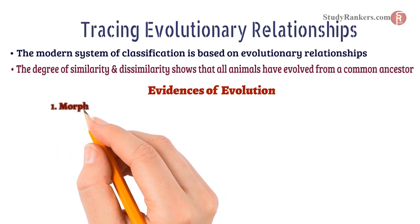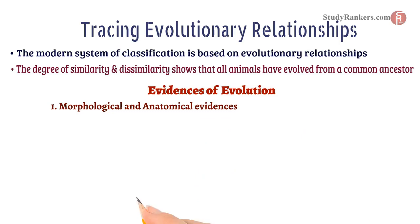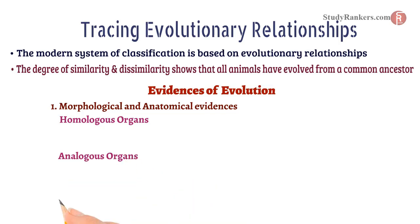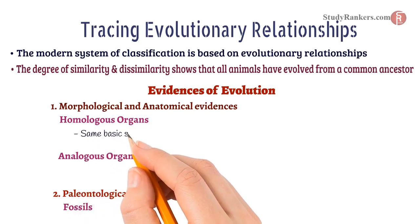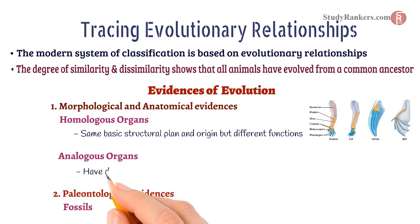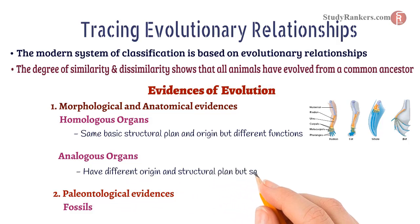The first evidence is morphological and anatomical evidences, which include homologous organs and analogous organs. Homologous organs have the same basic structural plan and origin but different functions. They suggest the presence of a common ancestor. For example, the four limbs of a frog, reptile, etc. Analogous organs are organs that have different origin and structural plan but the same function. They suggest different ancestors.